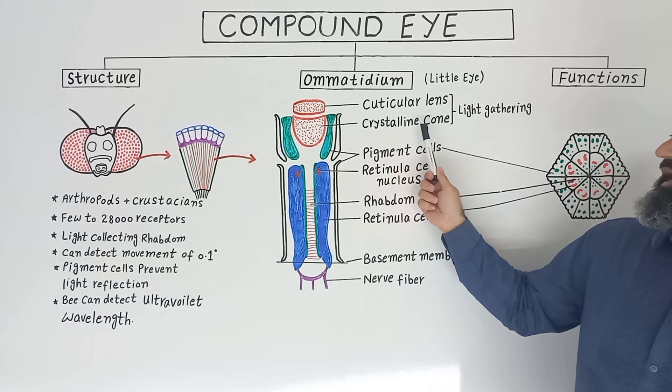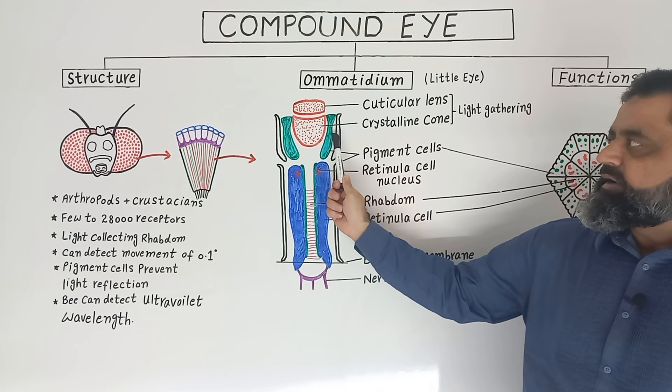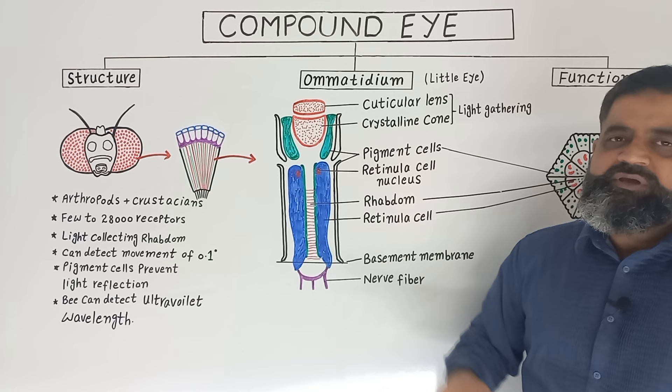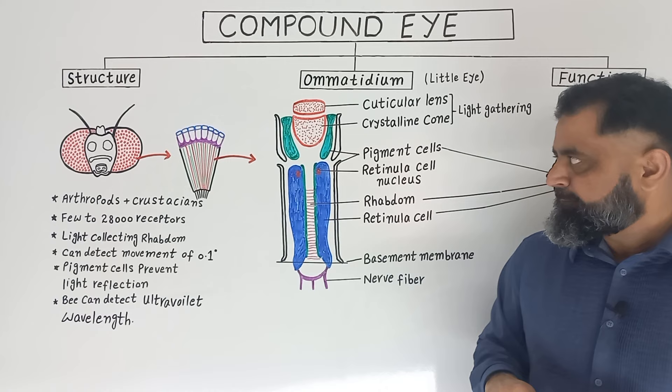Both of these structures — the cuticular lens and the crystalline cone — help to gather the light coming in towards the compound eye. These two structures are guarded by pigment cells, which help to avoid dispersion of light to other neighboring ommatidia present nearby.